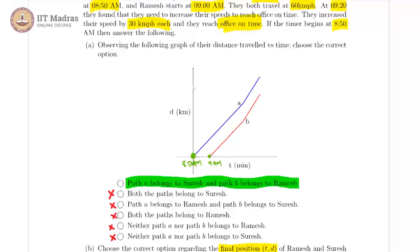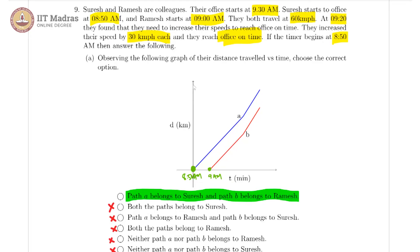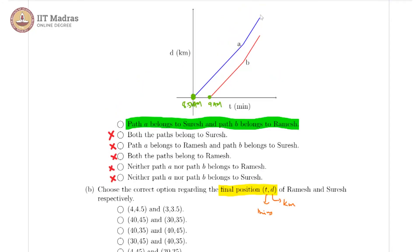So we know that Suresh started at 8:50 and he traveled till 9:30. That means Suresh traveled for 40 minutes whereas Ramesh started at 9:00 a.m. and reached office at 9:30 a.m. So Ramesh traveled for 30 minutes. However, both of them reached at the same time which means this point and this point in the graph both of them have the same x coordinate.